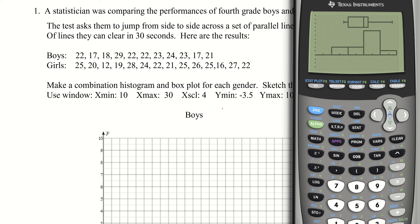As soon as I hit graph, I should see both — and there they are. There's the combination box plot up on top and the histogram down below. One nice thing about this view is that if I press the trace button, I can toggle between different things. Right now I'm on the box plot. If I hit the down arrow, it switches to the histogram, so I can toggle between the two different views.